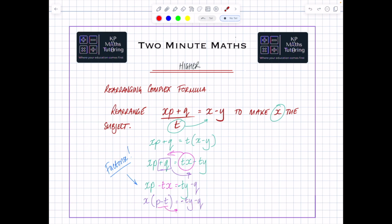And then all you're doing is you're picking up this p minus t, which is currently multiplied by that x. Move it over, and when you move it over it actually becomes a divide. So you're saying x is now on its own and it's minus ty minus q, and it's all divided by p minus t. That would be your answer to making x the subject. Hope that helps you. Hope you found it useful.